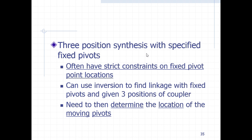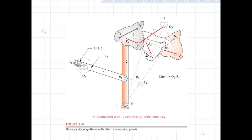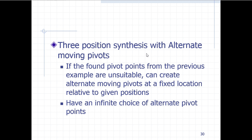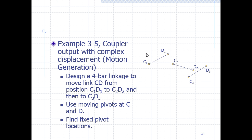Sometimes we have strict constraints on our fixed pivot locations. By fixed pivot, we mean the ground locations O2 and O4, generally where the crank and the rocker are joined to the ground via revolute joints. We can use inversion to find a linkage with fixed pivots and the given three positions of coupler motion. We then need to determine the location of the moving pivots. This procedure is quite different from the one where we are given specified moving pivots — that is the more normal, easier design.